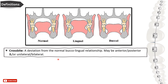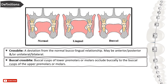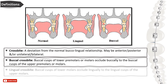Crossbite is a deviation from the normal buccal-lingual relationship. It may be anterior or posterior, and uni- or bilateral. For posterior crossbite: buccal crossbite means the buccal cusps of lower premolars and molars occlude buccally to the buccal cusps of the upper premolars or molars. Lingual crossbite means the buccal cusps of lower molars occlude lingually to the lingual cusps of the upper molars.